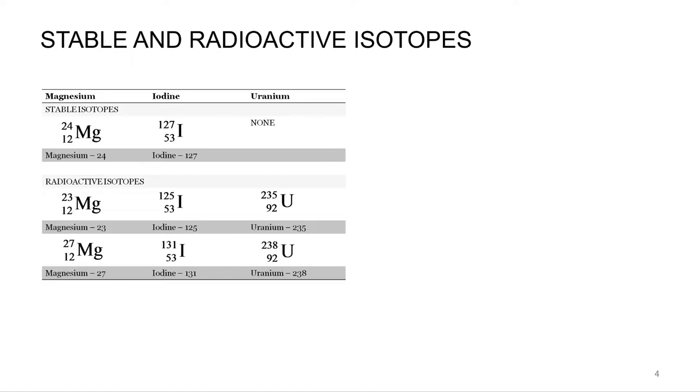So uranium, all of its isotopes are unstable, all will undergo nuclear fission. And so uranium-235, uranium-238, all radioactive.